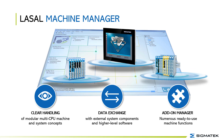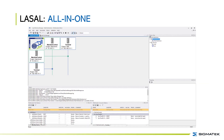The machine manager controls the communication of all stations. It displays clearly all the individual software packages and dependencies in a machine or system. You can do an easy data exchange with external system components and higher level software. On the right side you see the multi-CPU stations, and on the left side is the multi-master editor, which makes it easy to connect the several projects together.